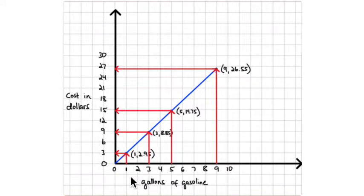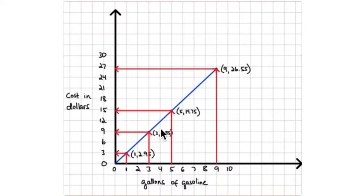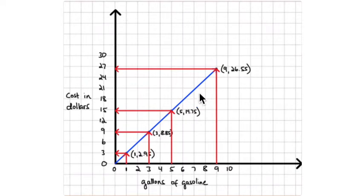The number of gallons is the independent variable — you look at that number and determine what the cost is, which is dependent on the gallons purchased. So three gallons costs eight dollars and eighty-five cents, and five gallons costs fourteen dollars and seventy-five cents. The line shows the relationship between cost in dollars and gallons of gasoline: it's two dollars and ninety-five cents per unit, so every unit you go over on the x-axis, you go up two dollars and ninety-five cents.